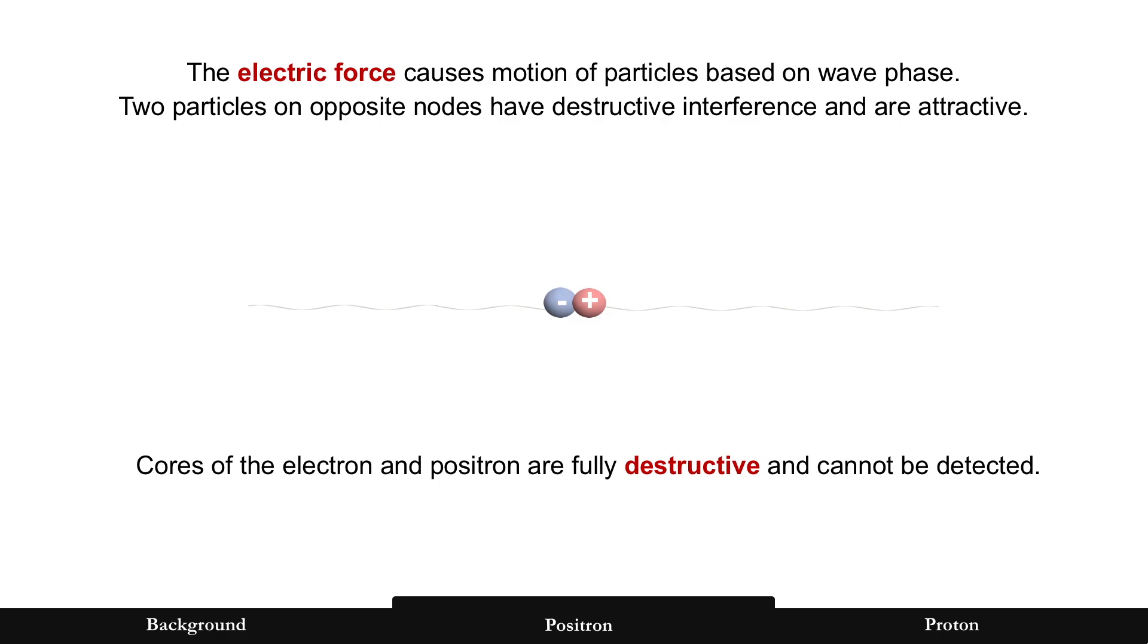But in this case we're taking a look at the positron. And an electron and a positron are fully destructive waves. Which also means that the standing waves don't form. There are no waves for standing waves. So therefore there is no energy to be measured as matter. And as a result, it looks like matter is completely destroyed in this process.